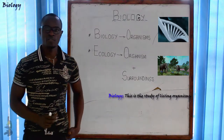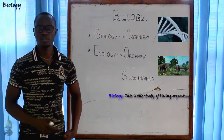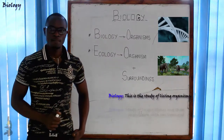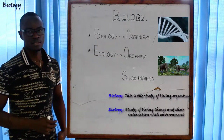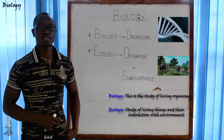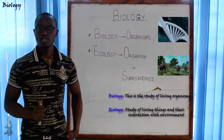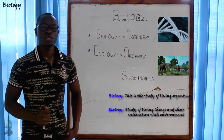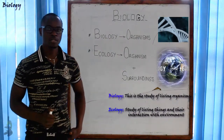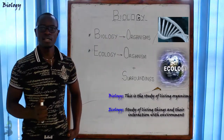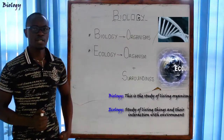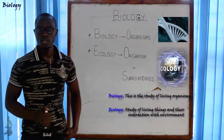Now let's also define ecology and look at the differences between the definition of biology and ecology. When asked the definition of ecology, we define it like this: ecology is the study of living things or living organisms and their interactions with their surrounding or environment. You will notice that in the definition of ecology we have also added environment or surrounding.